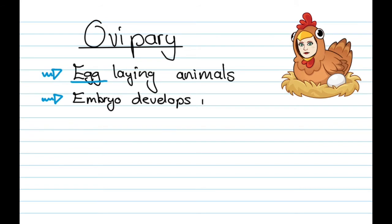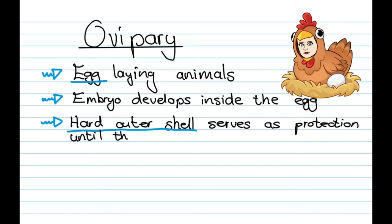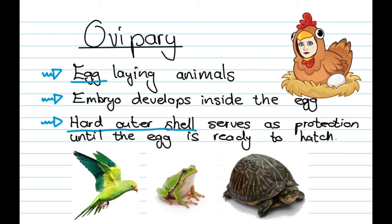The first one, ovipary, is going to deal with egg-laying animals. With these egg-laying animals, the embryo develops inside of the egg, then the egg is laid, and later on it hatches. Until that is ready to happen, there's a hard outer shell that serves as protection. Examples include birds, amphibians, and reptiles such as tortoises.